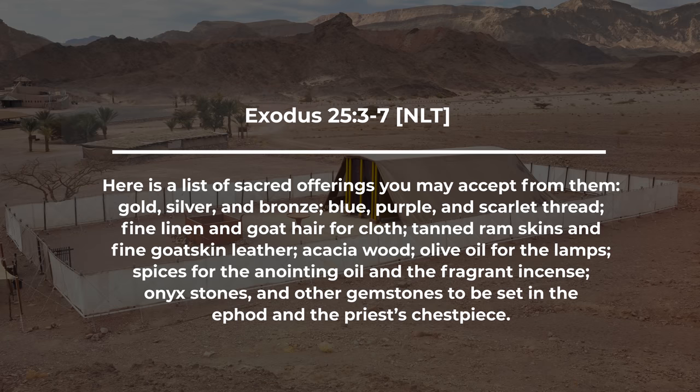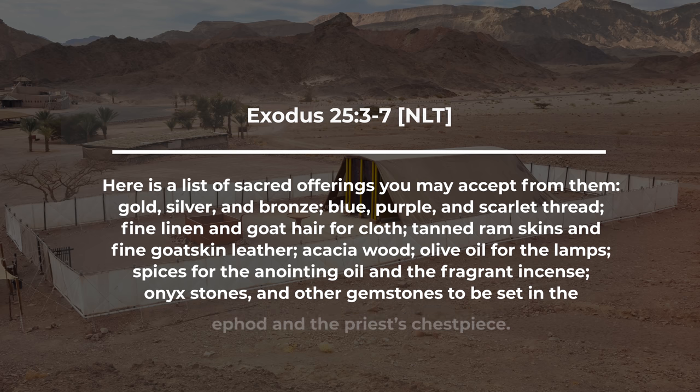Here is a list of sacred offerings you may accept from them: gold, silver, and bronze; blue, purple, and scarlet thread; fine linen and goat hair for cloth; tanned ram skins and fine goat skin leather; acacia wood; olive oil for the lamps; spices for the anointing oil and the fragrant incense; onyx stones and other gemstones to be set in the ephod and the priest's chest piece.